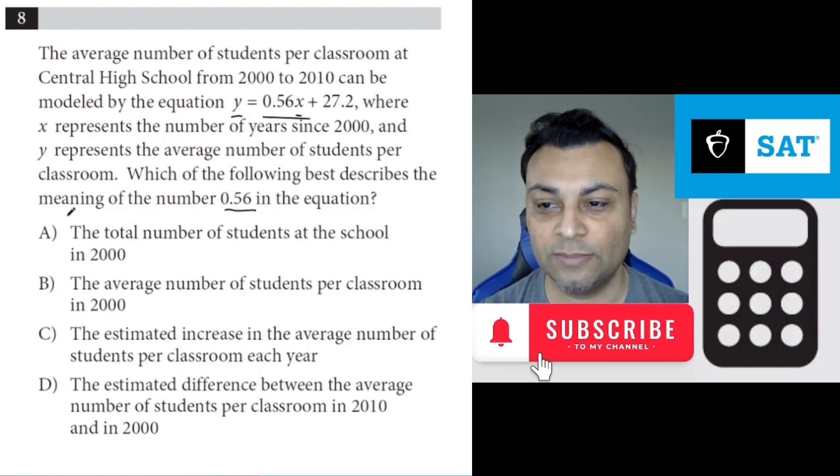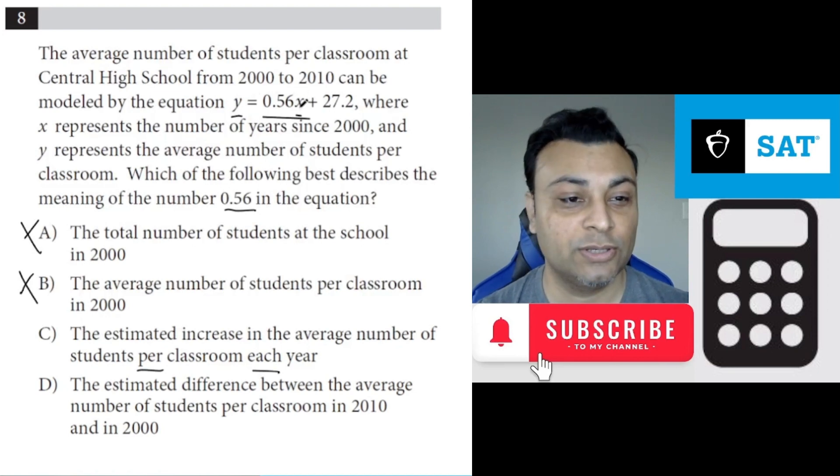The total number of students - that's not the meaning of slope. The average number - that's not the meaning of slope. The estimated increase in the average number of students per classroom each year. So how does y change per one unit change in x? How does y behave when x changes? And that's the meaning of slope. So the answer is C.